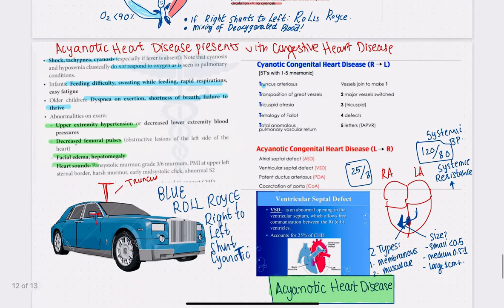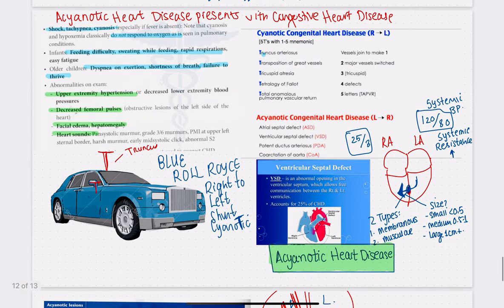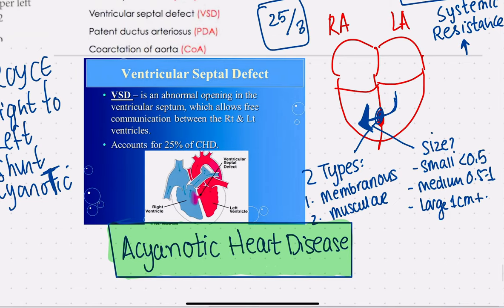A ventricular septal defect is an abnormal opening in the ventricular septum which connects the left and right ventricle. The ventricular septum lines the ventricular wall between the left and right ventricles. These holes typically spontaneously close within six months after birth. However, ventricular septal defect contributes to a large majority of causes of congestive heart disease in the neonate or infant.